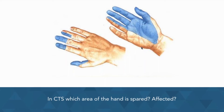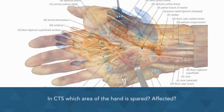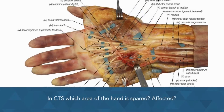Why, you may ask? Well, let's take a look at the anatomy. We can see that there is the palmar branch of the median nerve that branches off of the median nerve proximal to going through the carpal tunnel. It then branches superficially over the carpal tunnel, so it is not going through it.